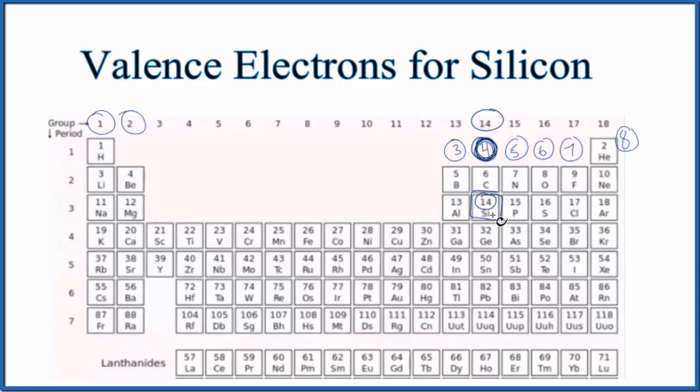Let's write the configuration. So for the electron configuration, we'll use all 14 of these electrons. We have 1s2, 2s2, 2p6, 3s2, and then 3p2. These all add up to 14.